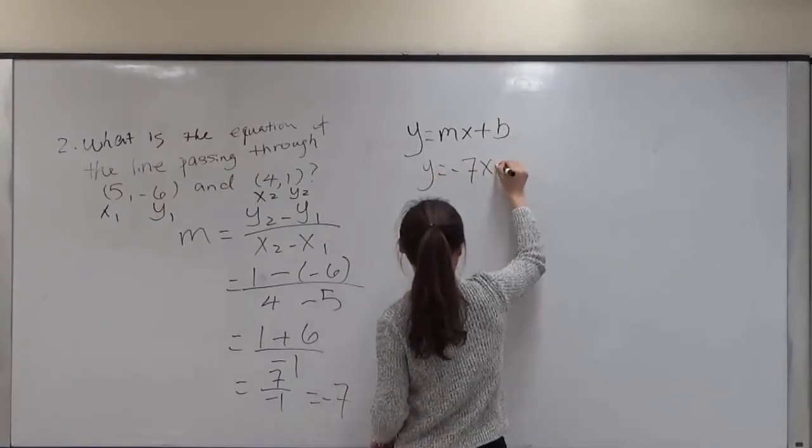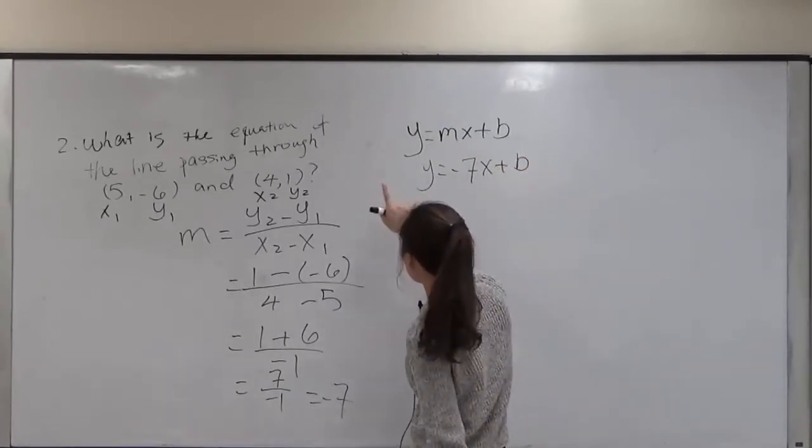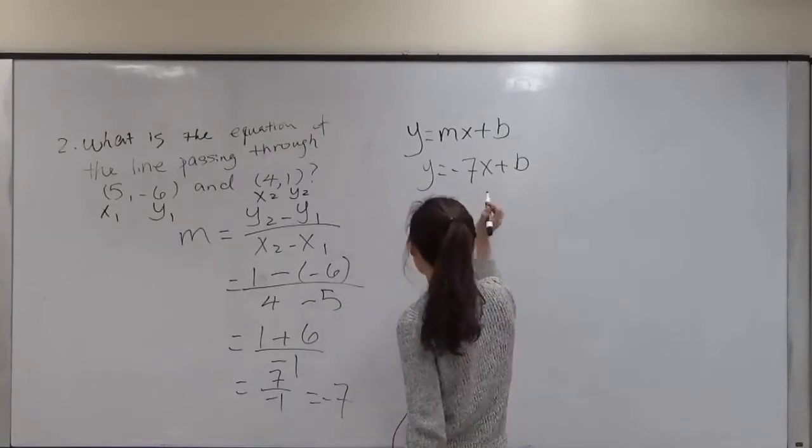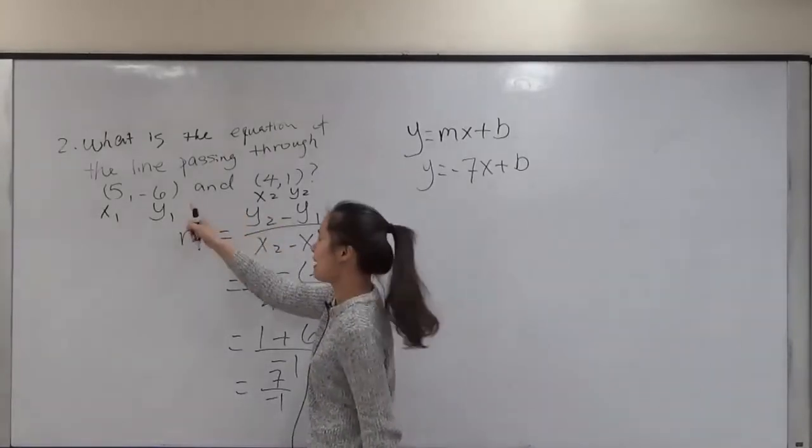I have negative 7x plus b and since we have two points we can pick one of the points for x and y values. I'm going to pick the first point x1 and y1.